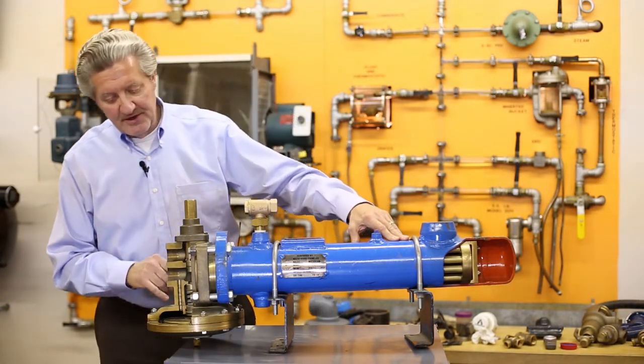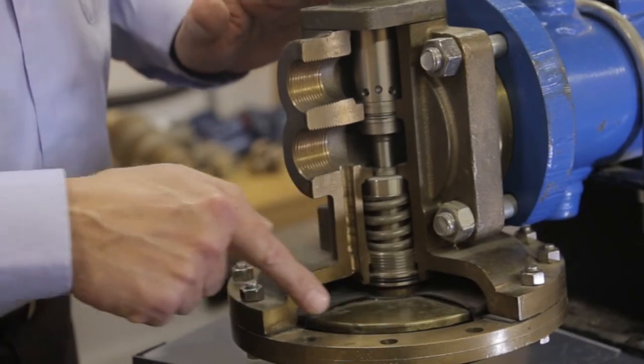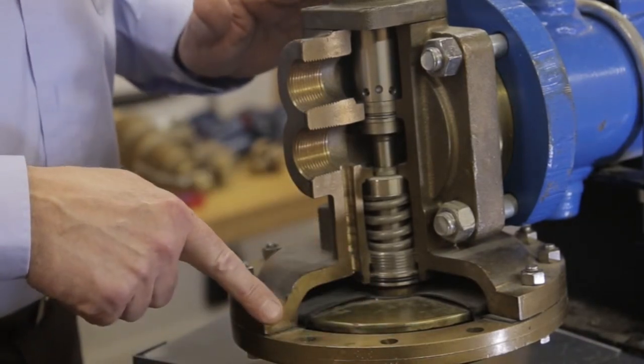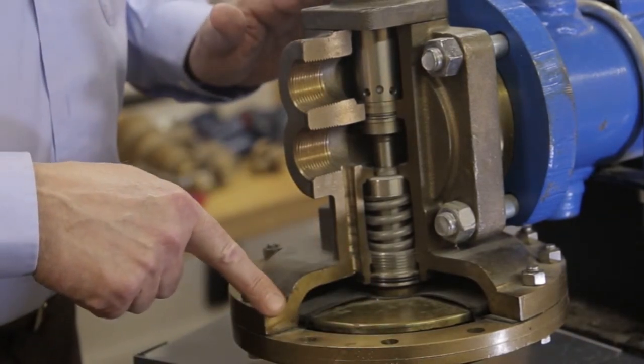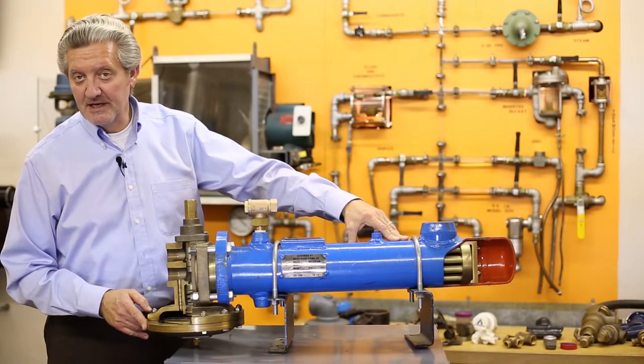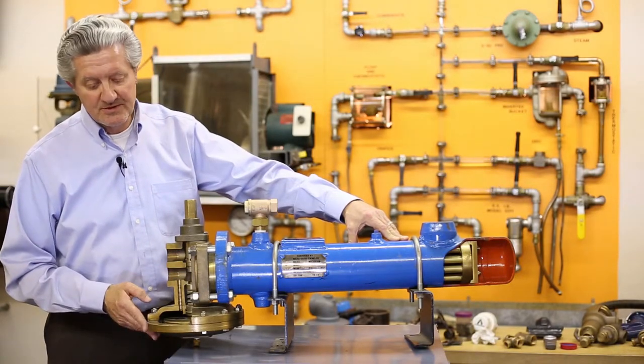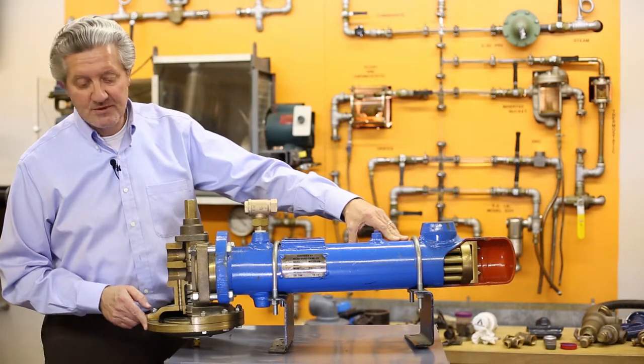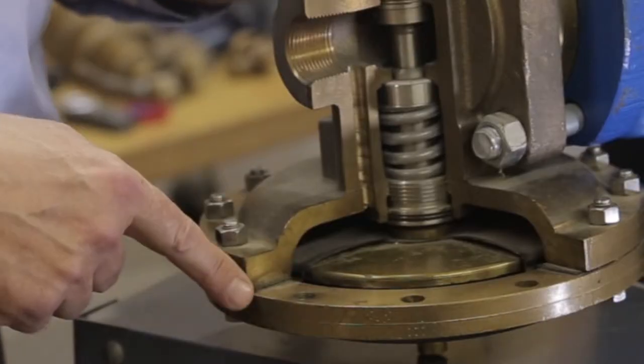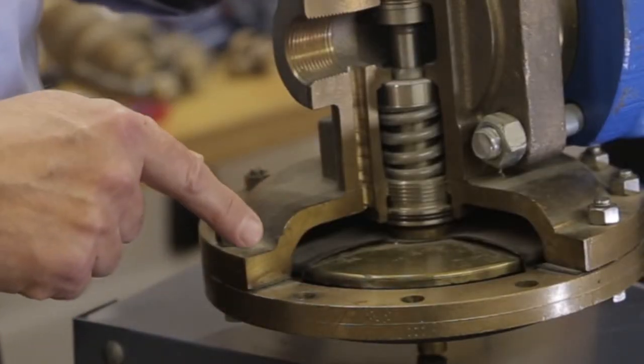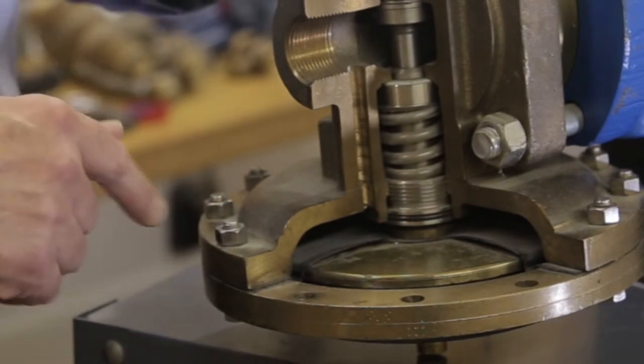Another feature here is that the unit itself, because we are feed-forward design here, we have the diaphragm on the bottom. In case of a failure, in case of your cold water source, we lose the cold water source, the diaphragm ruptures. This unit will fail to the cold or to the closed position, so you do not have the potential for scalding out into the system.